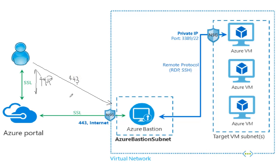One thing I want to emphasize here is that you can only connect to Bastion from the internet via the portal. We cannot just copy the URL which the portal gives you and connect directly from a new browser window. The authentication happens via the portal, and as of today we can only connect to Bastion using the Azure portal. So basically the communication between the user and the Bastion happens over the internet on port 443.